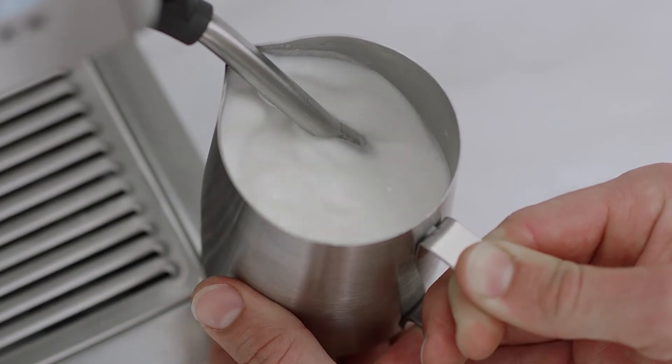When the jug is too hot to touch, it's at the right temperature, around 150 degrees Fahrenheit.